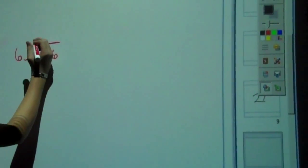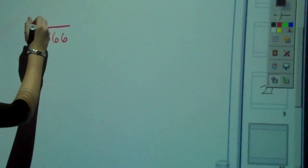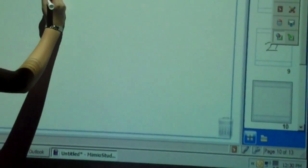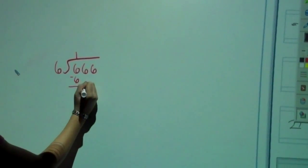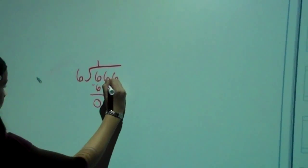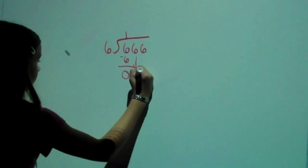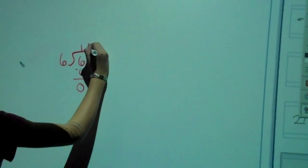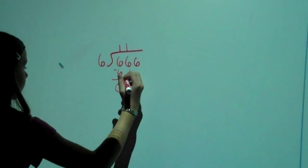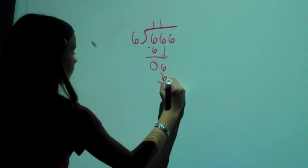So 6 goes into 6 once, of course. And then 6 times 1 is 6, so 6 minus 6 is 0. Then you bring down 6, 6 goes into 6 once, and then it's 6 again, so 6 minus 6 is 0. And then you bring down another 6.